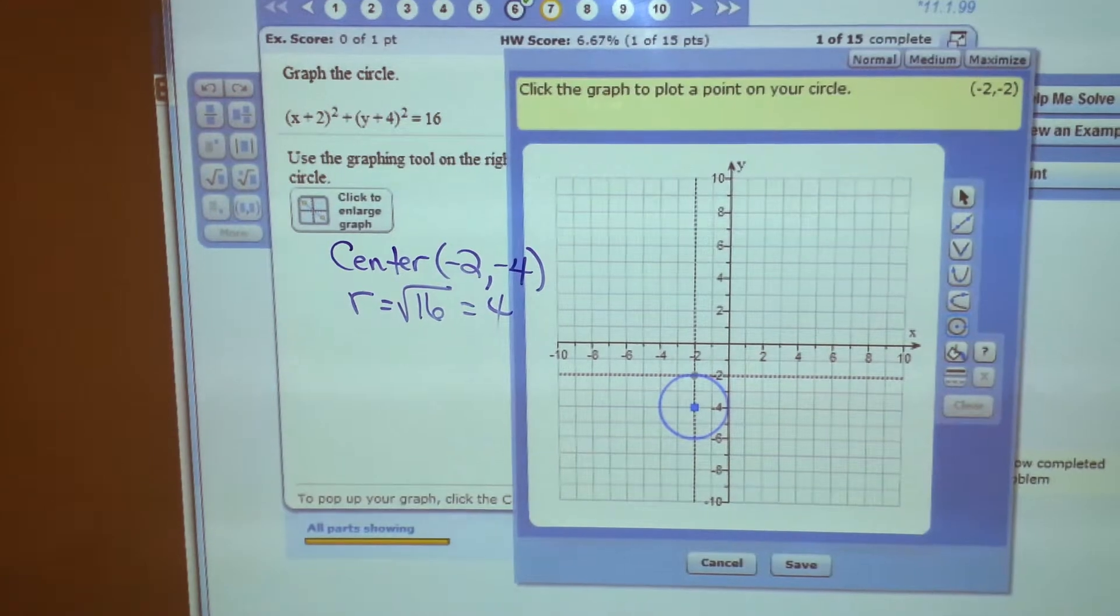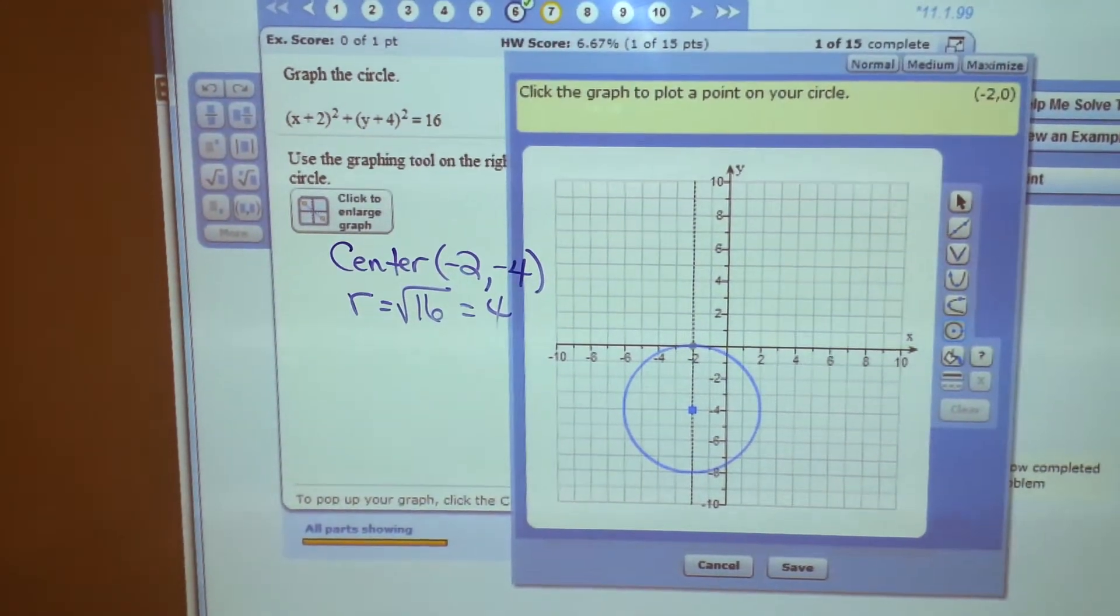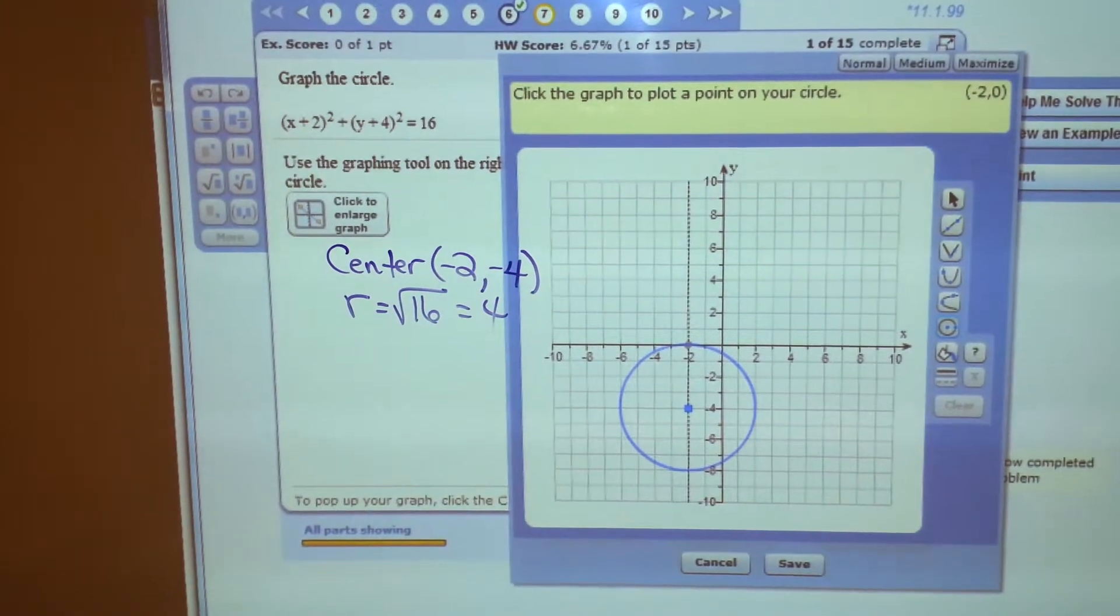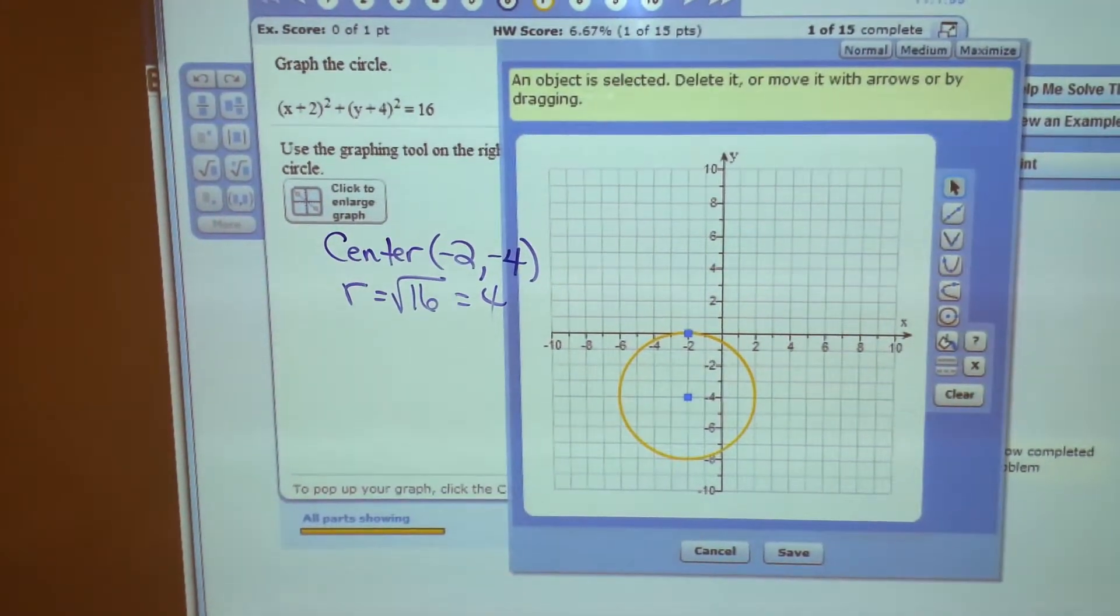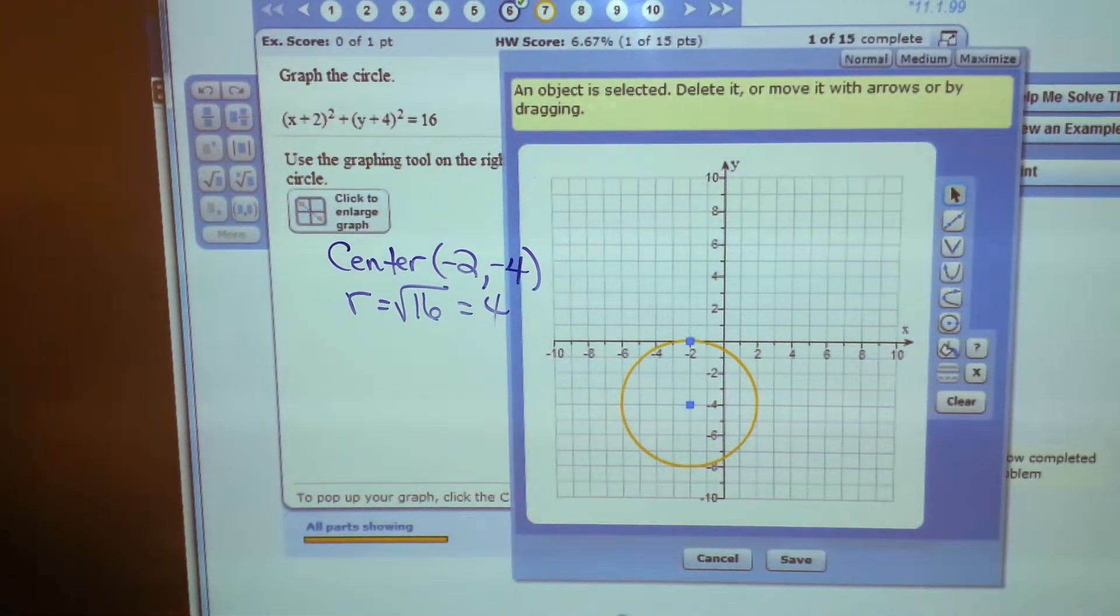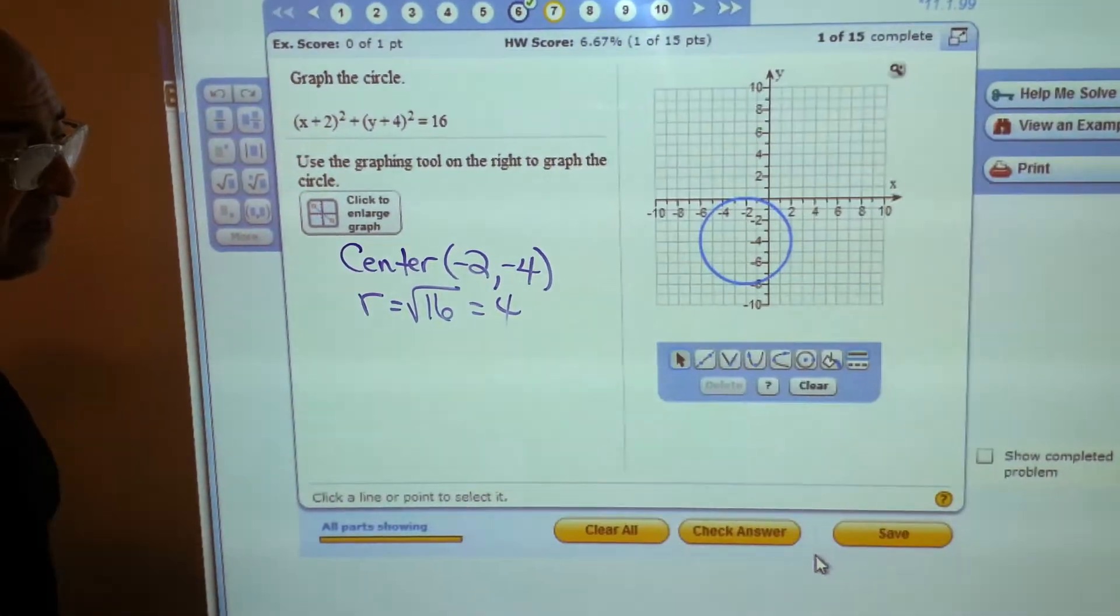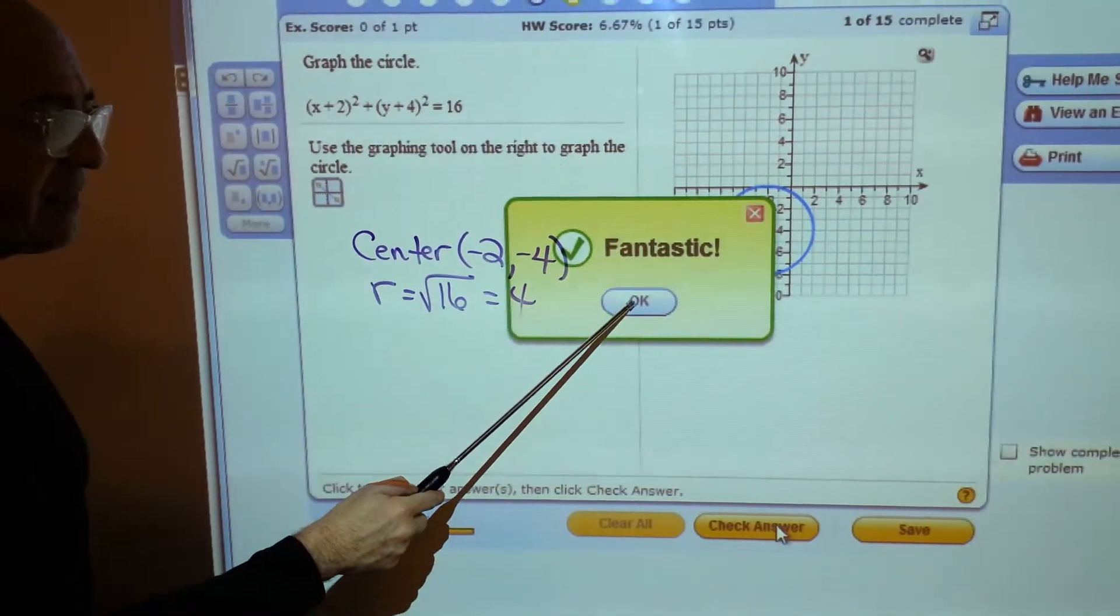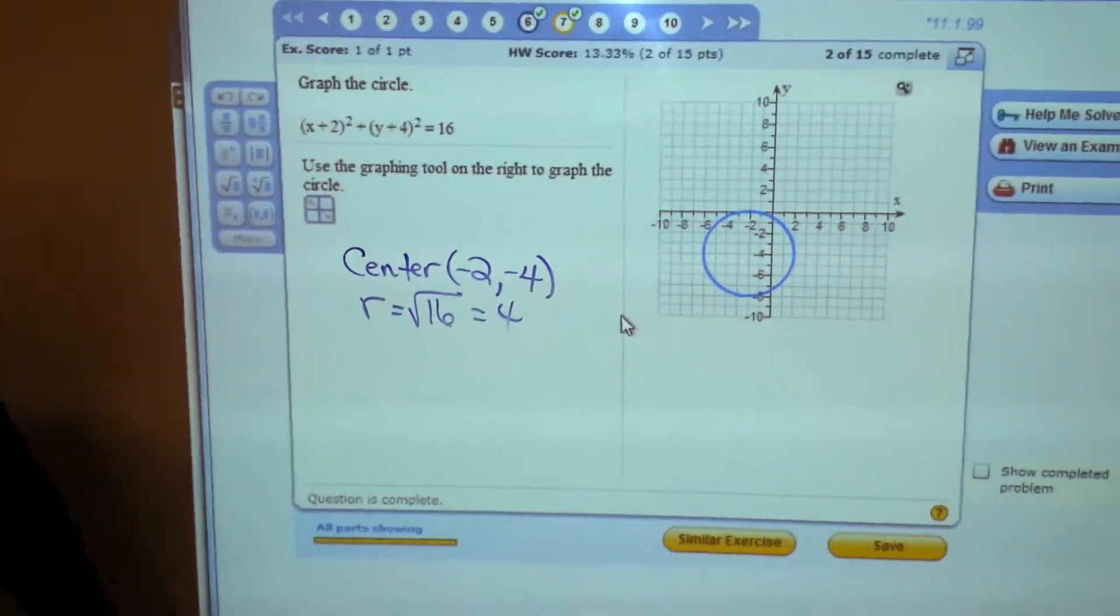So, let's see. Have I moved over 4? 1, 2, 3, 4. Yes. So, save. Check your answer. Very nice little graphing tool to graph a circle.